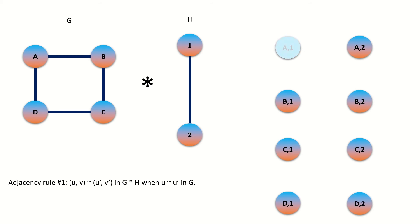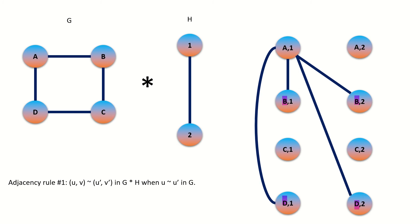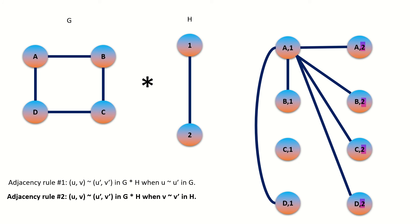By the first adjacency condition, vertex A1 connects to all vertices with left entry adjacent to vertex A in graph G. Since vertices B and D are adjacent to vertex A in graph G, vertex A1 connects to all vertices with left entry B or D. By the second adjacency condition, vertex A1 connects to all vertices with right entry adjacent to vertex 1 in graph H. Since vertex 2 is adjacent to vertex 1 in graph H, vertex A1 connects to all vertices with right entry 2. Note that some of these connections already met the first adjacency condition, but we only include one edge between pairs of vertices since we're creating a simple graph.